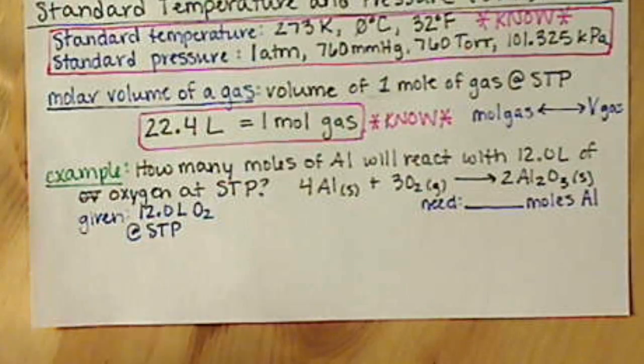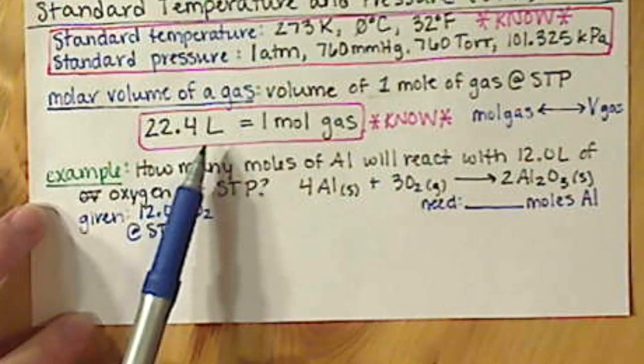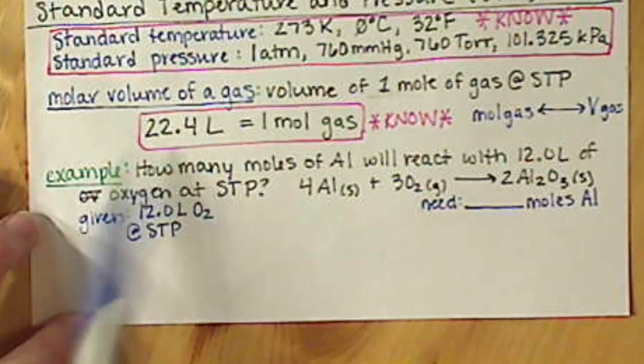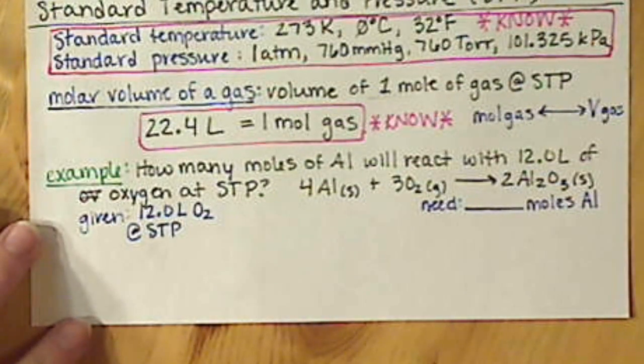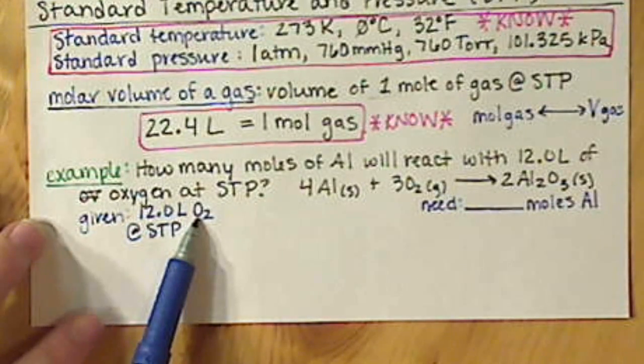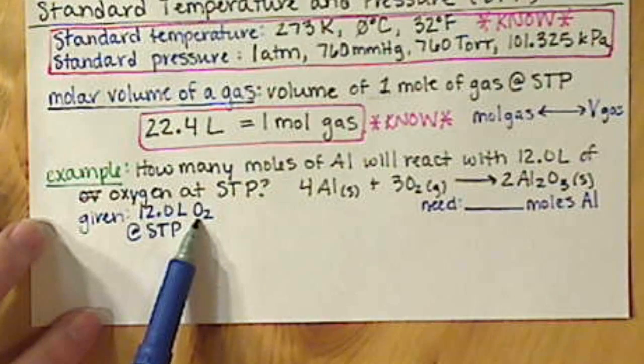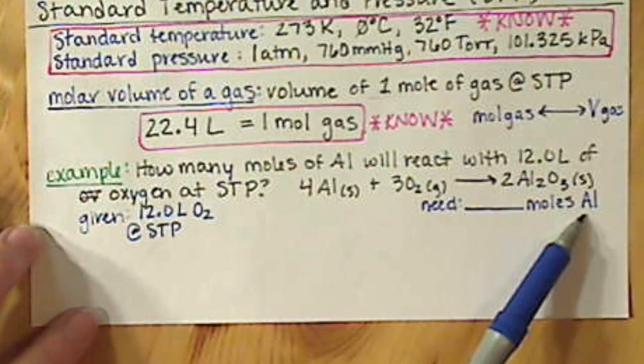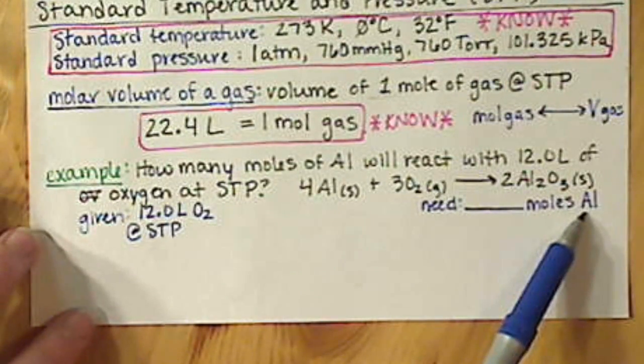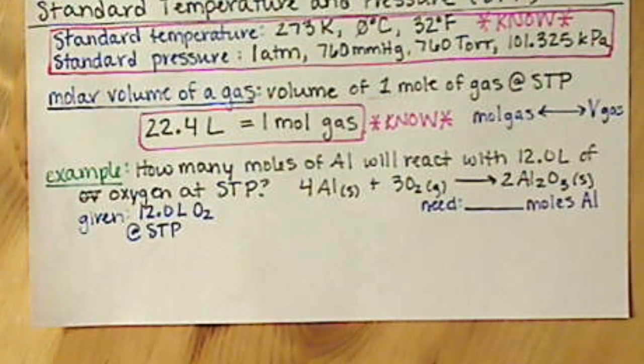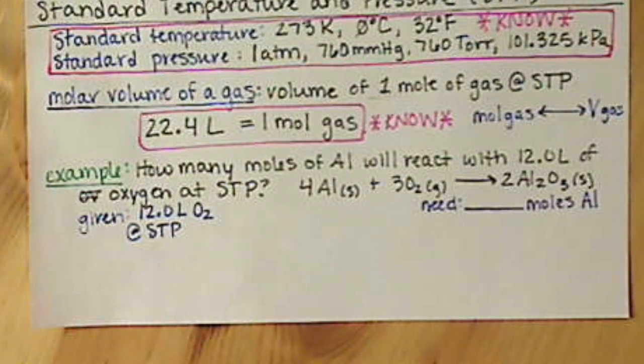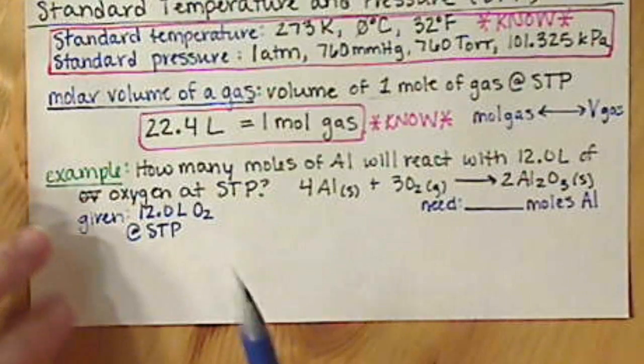So two things that should pop out right away. One, we know that we're at STP, so our shortcut is a possibility. Then the second thing that should pop out to you, and this is coming from Chapter 6, is that we're starting with one compound, and we're starting with a value associated with oxygen, and we need to end up with a different compound. We're going from oxygen to aluminum. Do you remember what the only way that we can convert from one compound to another is? Any stems from chapter 6? Remember, it's not that little critter that lives in your yard, but it goes by the same name. We want to always get to moles.